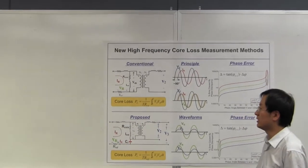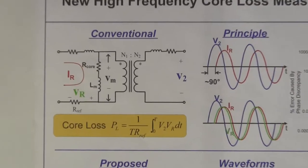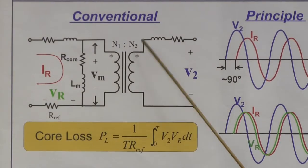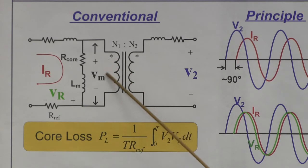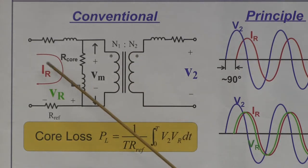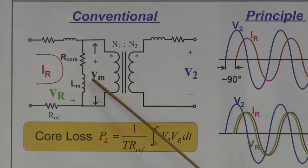To start, let me introduce the conventional method. This is the equivalent circuit of the conventional method. We wind the core sample as a transformer and excite the core sample on the primary side and sense the voltage on the secondary side. If the turn ratio is 1 to 1, V2 will equal Vm. The current through this R and L is sensed by the current sensor resistor.